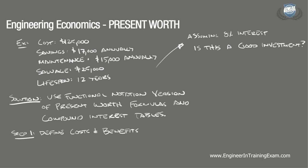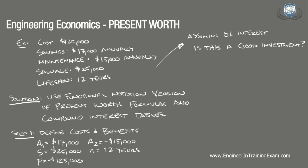The first step is to define the identified costs and benefits as well as the overall period of the investment. We are given a uniform annual cost A1 of positive $17,000 — savings from rent. We are given a salvage value of positive $25,000 — a savings at the end of the lifespan. We are given an initial cost of negative $125,000 — a cost to purchase. We are given another uniform annual cost A2 of negative $15,000 — the cost to maintain. And finally, we are given a period of 12 years.